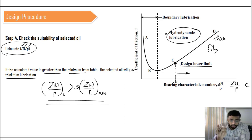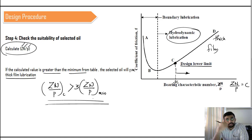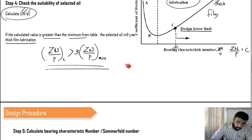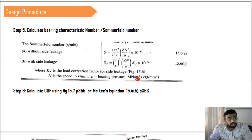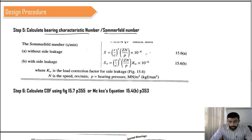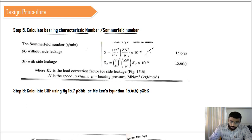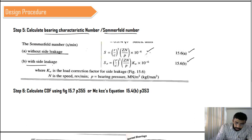After confirming oil suitability, calculate the Sommerfeld number (bearing characteristic number, capital S) using the equation: S = (r/c)² × (ZN/P) × 10⁻⁶. The r/c ratio is usually given in the question or can be taken from the table, as it stays within a standard range. Use equation 15.6a or 15.6b depending on the side-leakage condition. After calculating S, proceed to find the coefficient of friction.